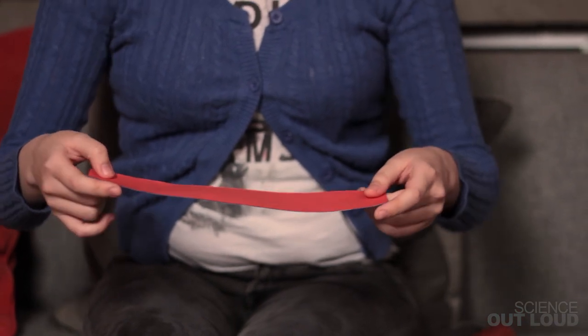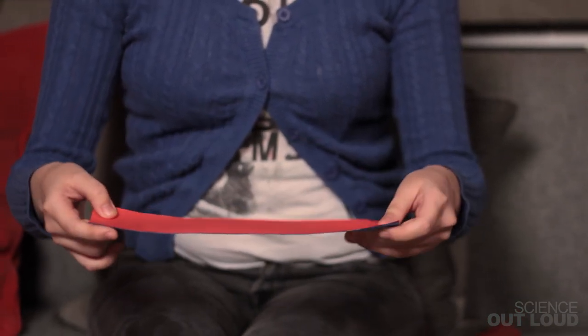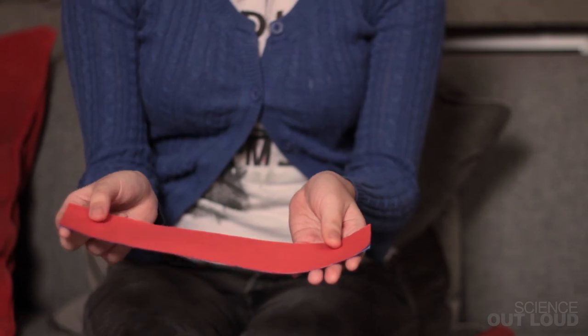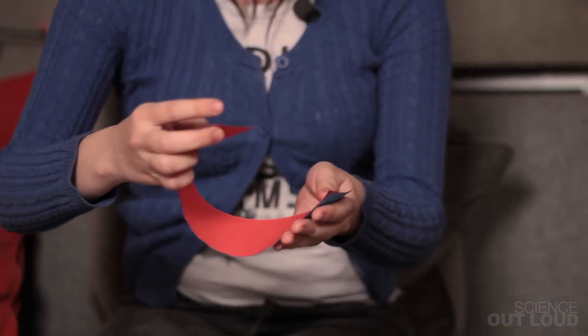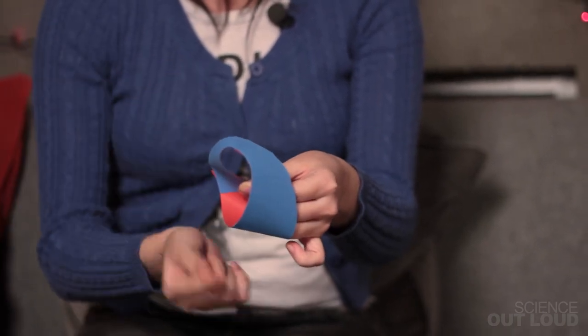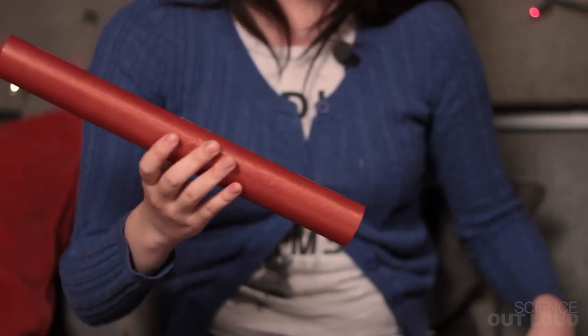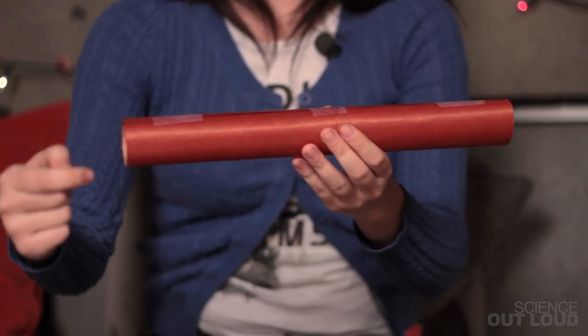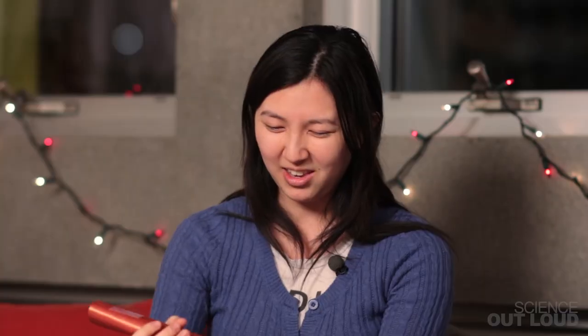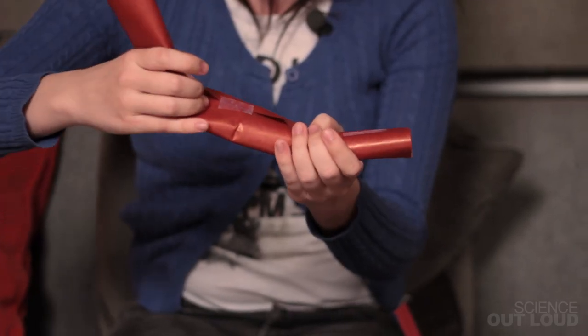So if we think back to the Mobius strip, we were taking a two-dimensional surface and essentially lifting it into the third dimension and introducing a twist, thus allowing us to create a non-orientable surface. We could theoretically create a three-dimensional non-orientable surface by taking the cylinder, which has length, width, and height, and lifting it into the fourth dimension in order to twist it in on itself.